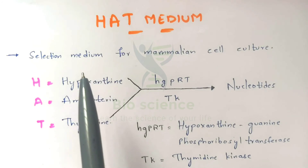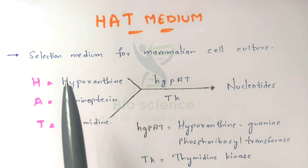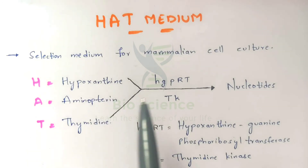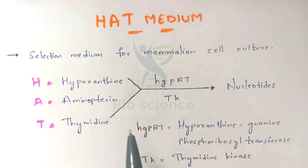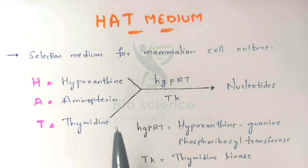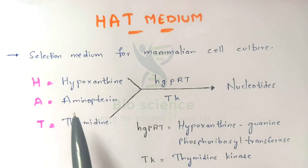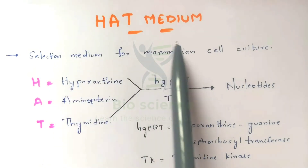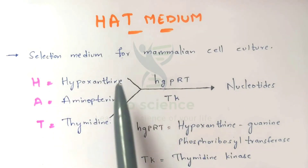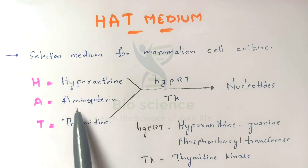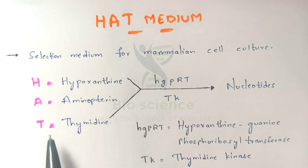By using HAT medium, we can screen the types of cells present in order to obtain the hybrid cell. I am going to explain the total process along with diagrammatic explanation. HAT is abbreviated as: H for Hypoxanthine, A for Aminopterin, and T for Thymidine.